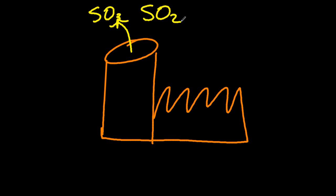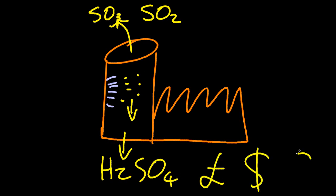So where is the best place for acid rain to fall? In the chimney. Then you can dissolve it in water, make sulfuric acid, and sell it to make money. That's quite clever, isn't it?